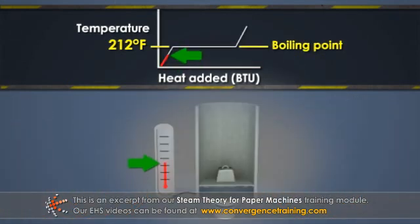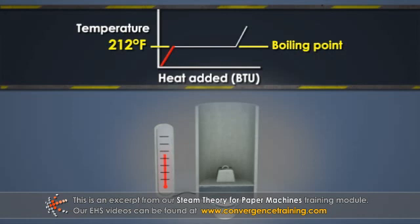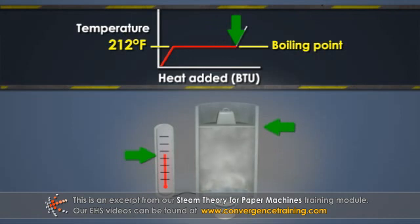As heat is added to liquid water, it increases in temperature. Each BTU, a unit of energy that is added, increases the temperature of one pound of liquid water by one degree Fahrenheit. Once the water reaches the boiling point, the temperature stops increasing. As even more heat is added, this energy goes toward creating vapor rather than increasing temperature.